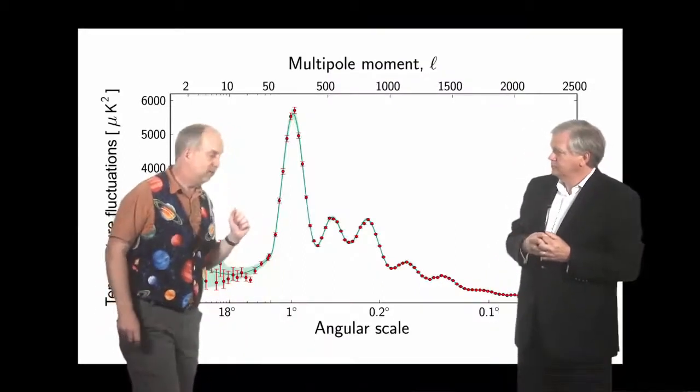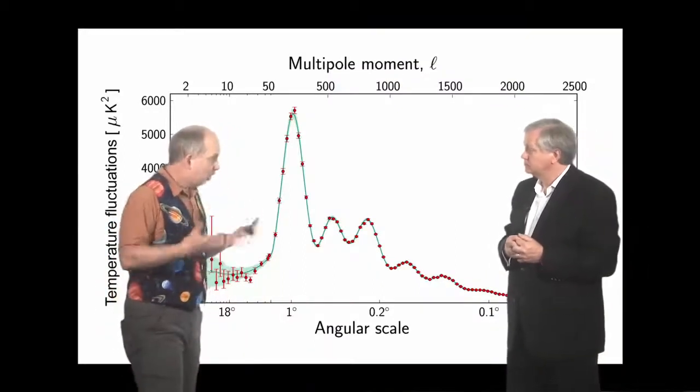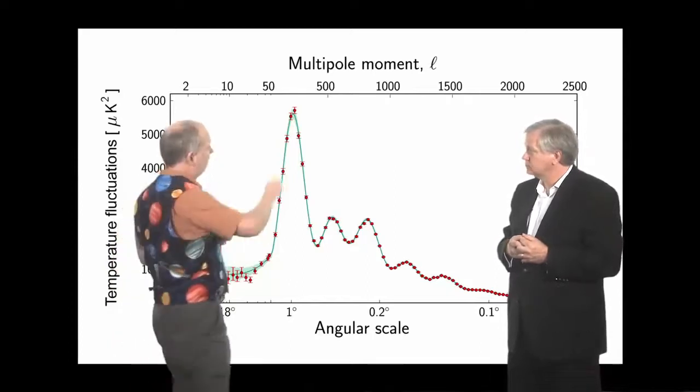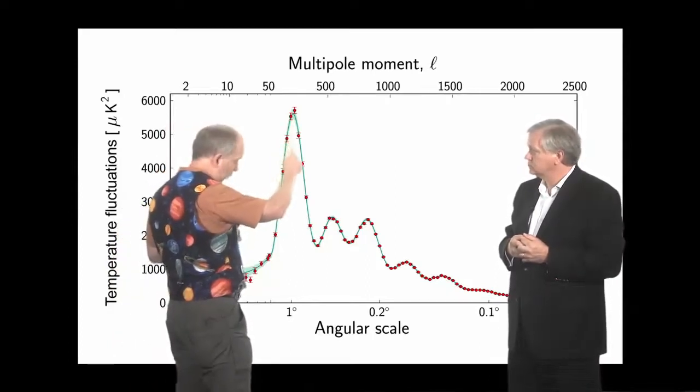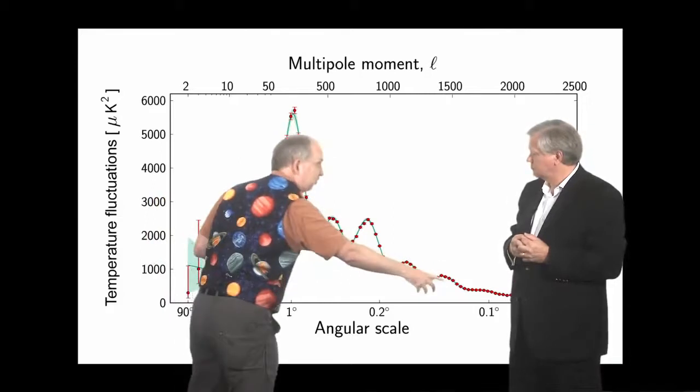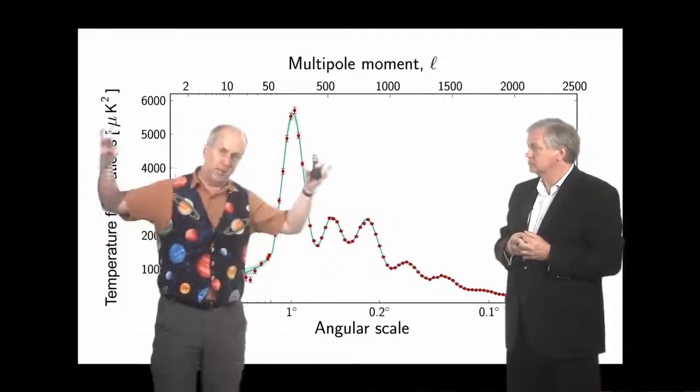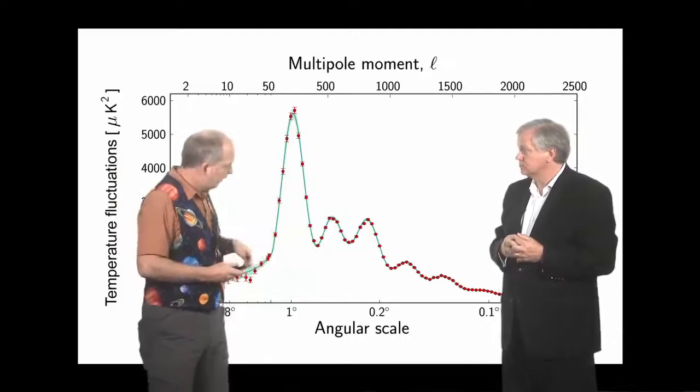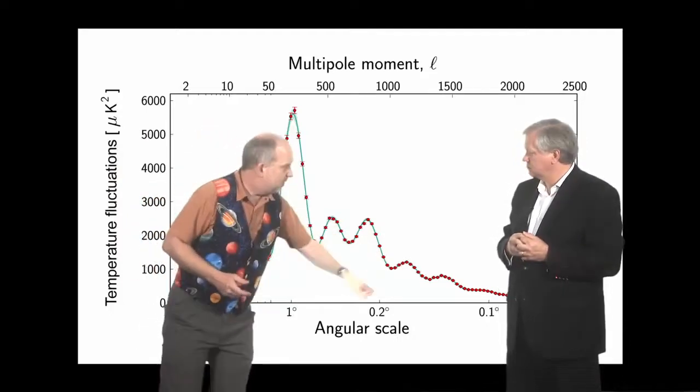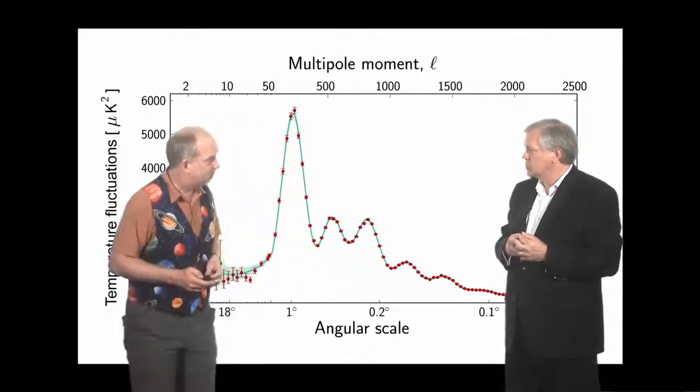So what you'd expect is, if there's a lot of dark matter and particularly a lot of baryons, you'd expect the odd-numbered peaks, so one, three, five, and so on, to be enhanced because that's where you're falling into the dark matter potential wells, and the even-numbered ones to be weakened because that's when you're bouncing out.